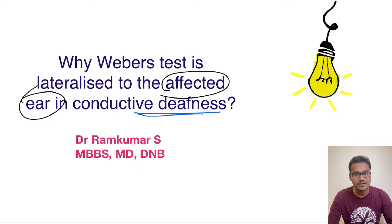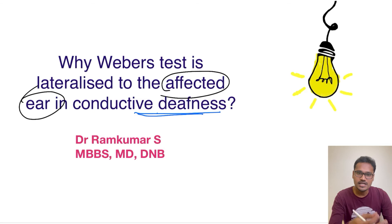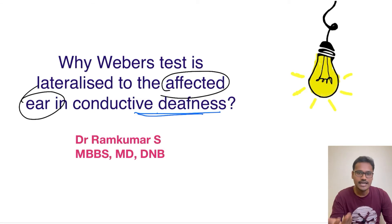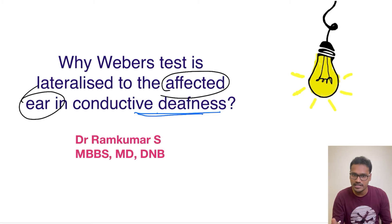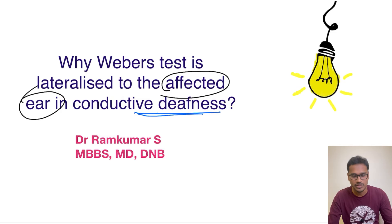Let's see what is Weber's test. Weber's test is a tuning fork test wherein you strike the prongs and then put it in the midline and ask the patient on which side he is hearing better — whether it is equally heard on both sides or one side is heard louder.